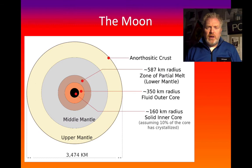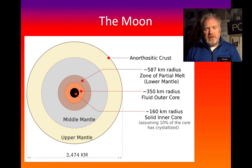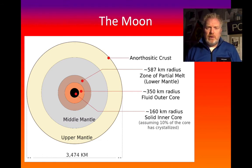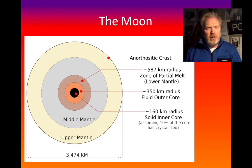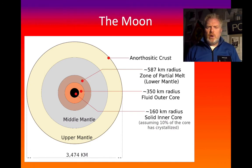There is a word on there that you won't have come across: anorthocyte. Anorthocyte is a type of igneous rock that's made of a mineral which is part of the feldspar group. We do find examples of that here on Earth, but it's a lot more unusual on Earth than it is on the Moon. What are the differences as well?